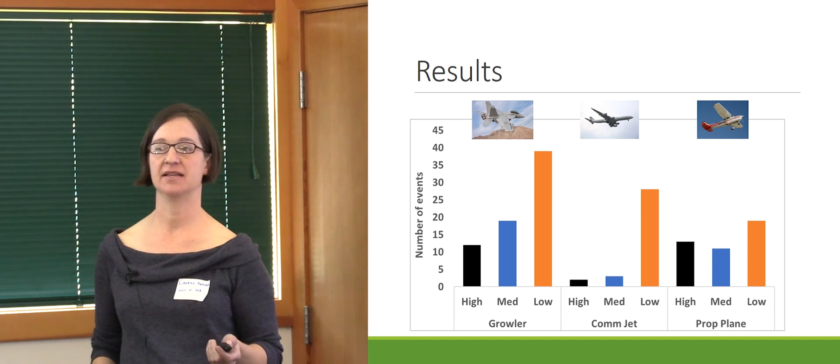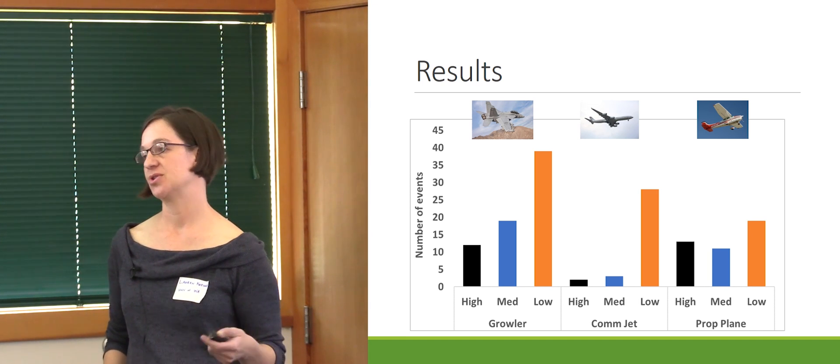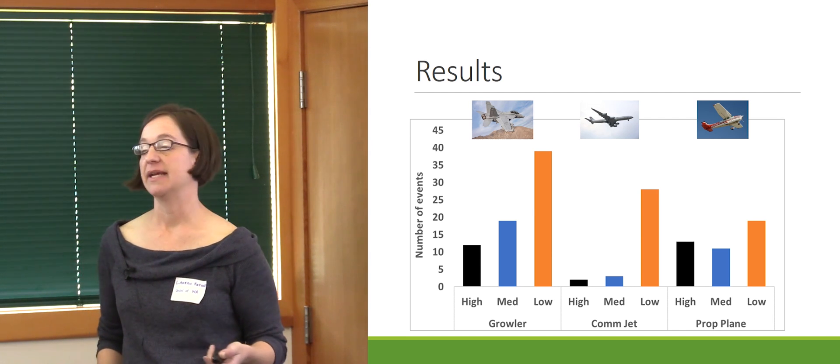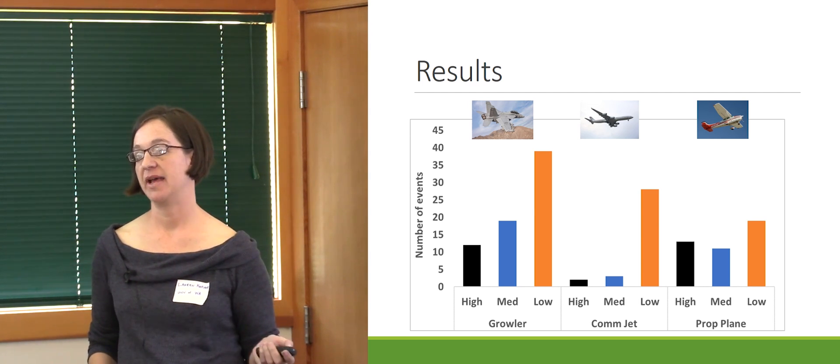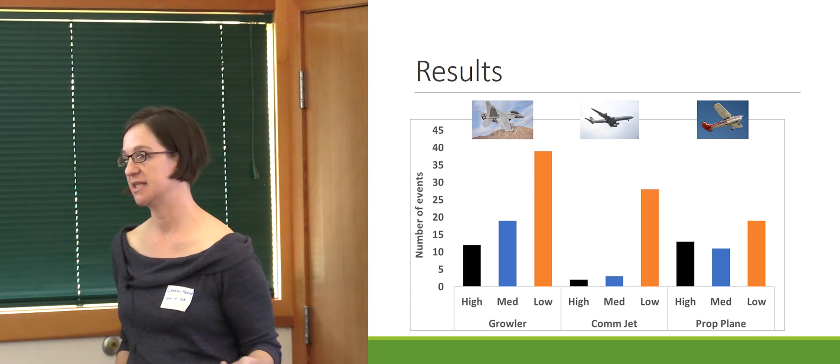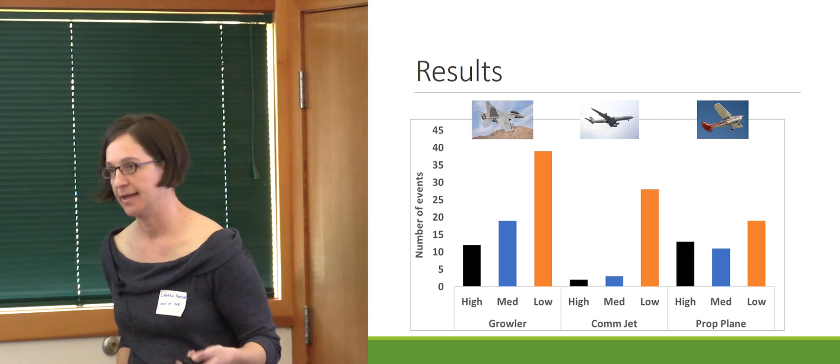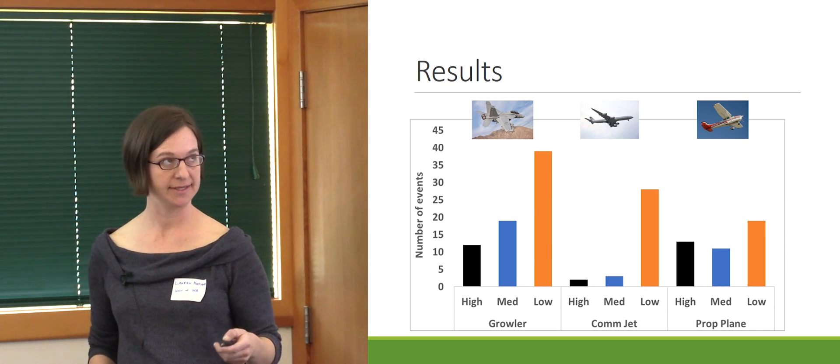What I'm doing is I'm going through and classifying each of these events. Now there are other air traffic, so I'm classifying them as Growler, commercial jets, and then there's also prop planes. What I'm building is a database of each of these events. Each of them has a duration, they have amplitude, they have the frequency ranges that are being impacted, time of day, all that kind of stuff. So I'm building this database of events.